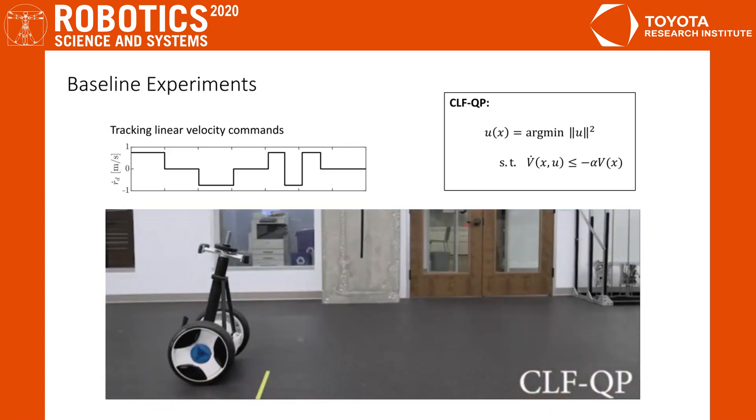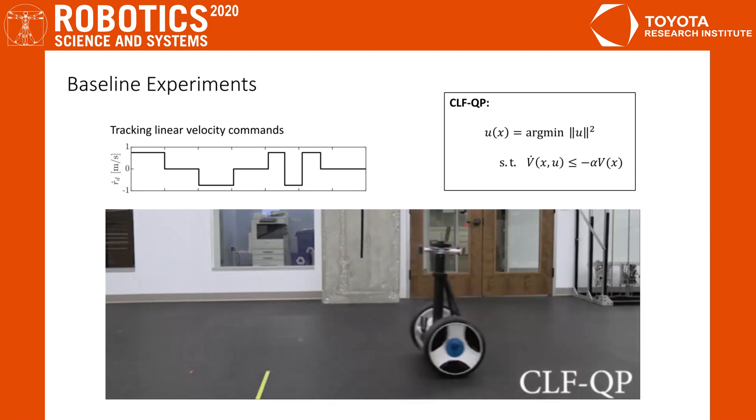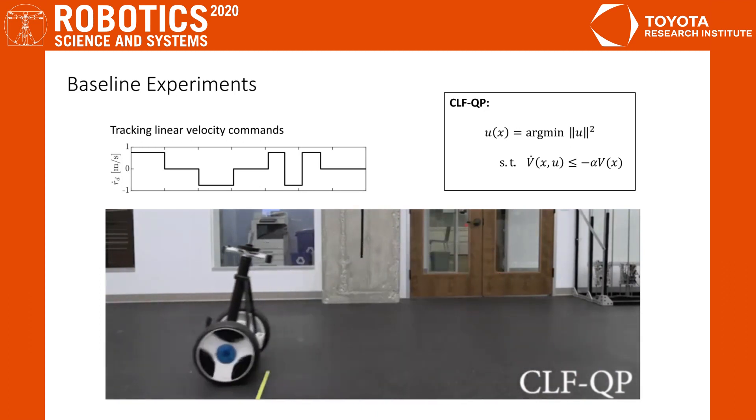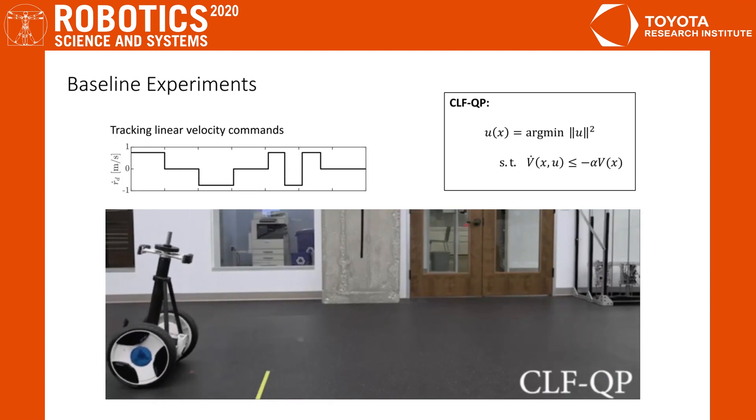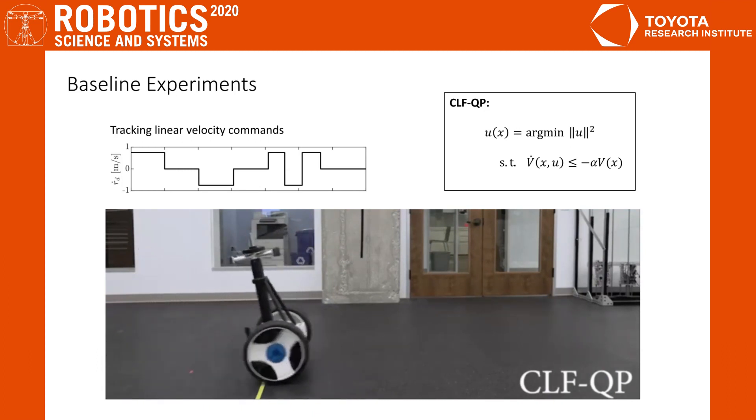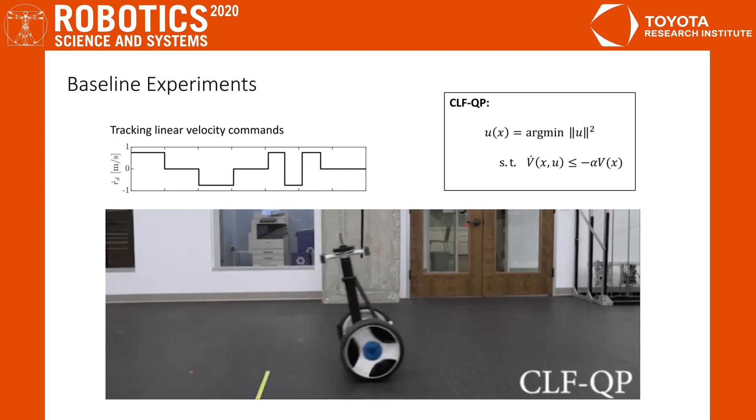We pick a velocity profile and ask the CLF-QP controller to track this reference while minimizing the input norm. Shown in the video, the Segway takes a rather aggressive dive every time the reference changes. This happens because the formulated QP only optimizes pointwise in time, but it doesn't consider future costs.